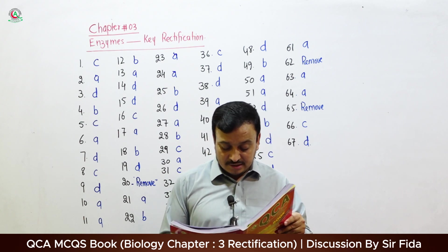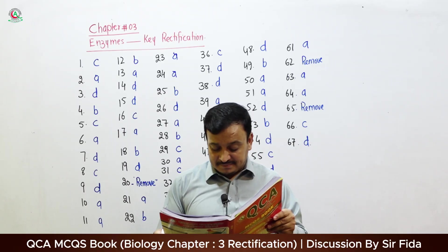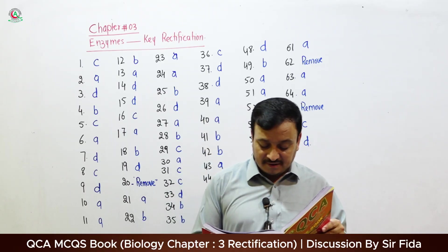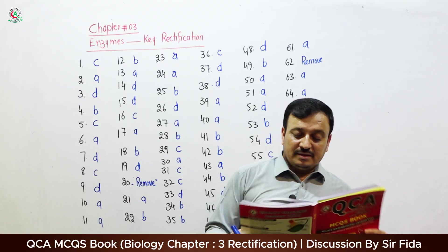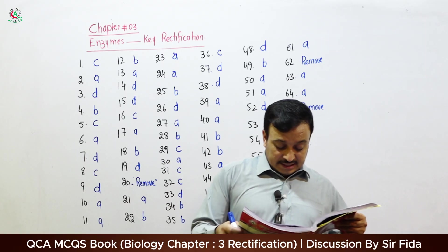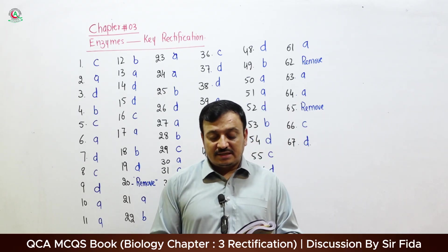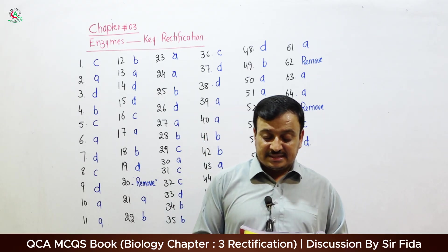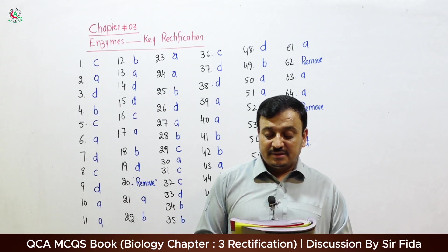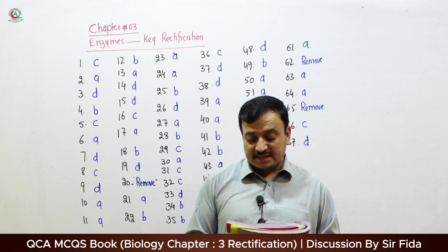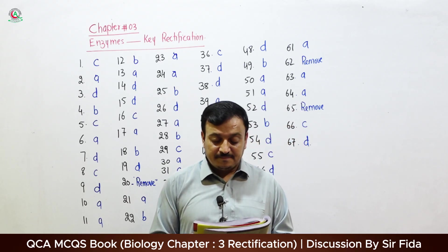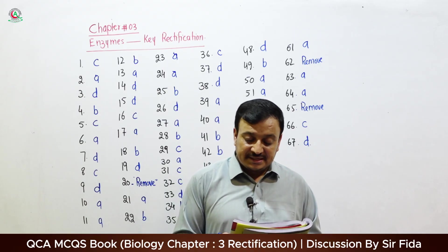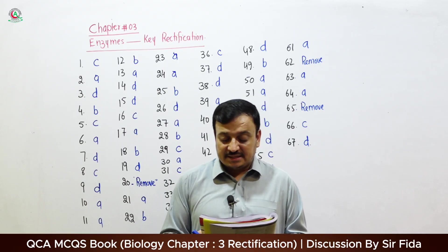Question 28: Enzyme without its cofactor is called — correct answer B: Apoenzyme. Question 29: Enzyme along with its cofactor is called — correct answer C: Holoenzyme. Question 30: Pepsinogen in the stomach is in the form of — correct answer A: Apoenzyme. Question 31: All of the following are properties of enzyme except — correct answer C: Increase activation energy.